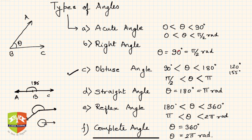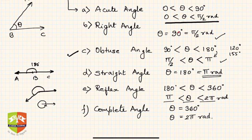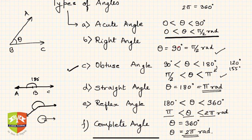I've also given the measures in radians, because later on we'll use radians a lot. Two pi radians is equivalent to 360 degrees, so 90 degrees is pi/2 radians. Acute angle: 0 to pi/2 radians. Right angle: pi/2 radians. Obtuse angle: between pi/2 and pi radians. Straight angle: pi radians. Reflex angle: between pi and 2*pi radians. Complete angle: 2*pi radians.